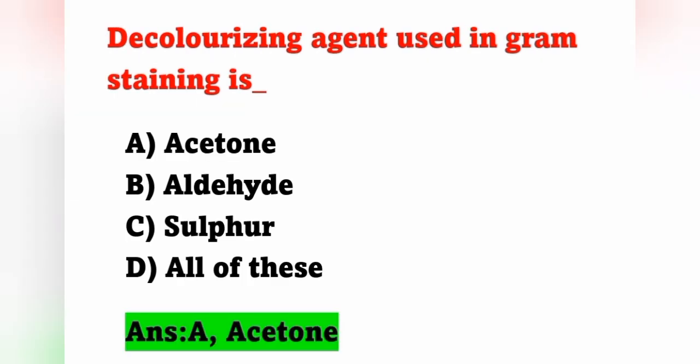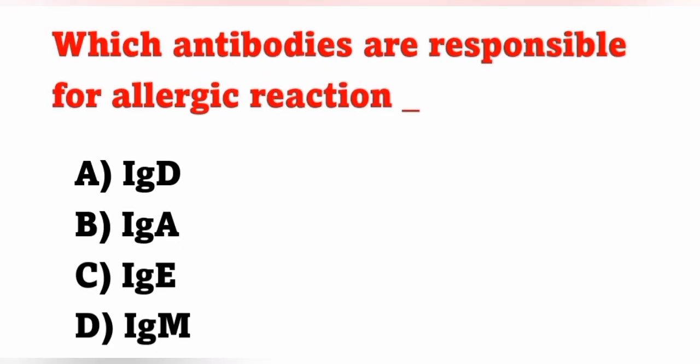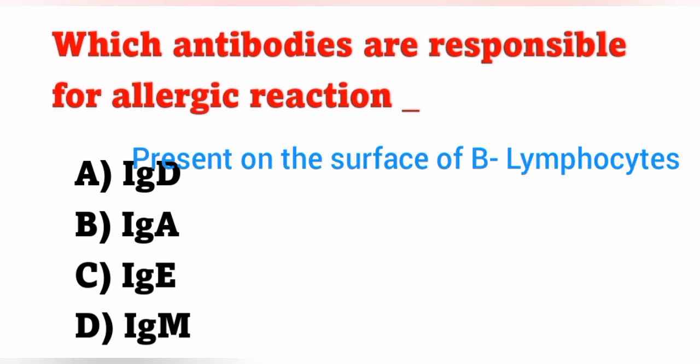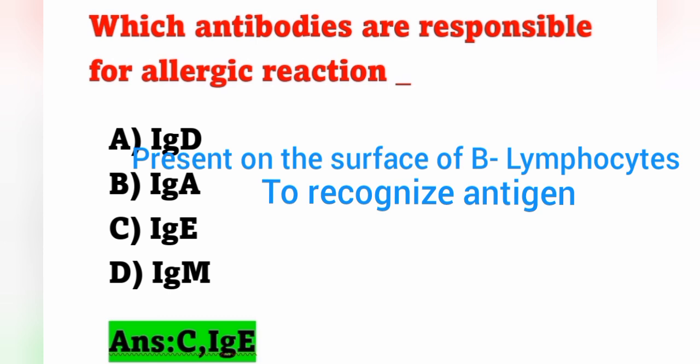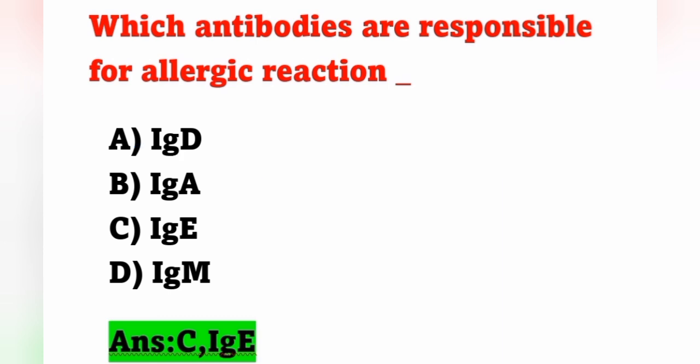Next question: which antibodies are responsible for allergic reactions? Option A: IgD, option B: IgA, option C: IgE, option D: IgM. The antibody responsible for allergic reactions is option C, IgE. IgD is present on the surface of B lymphocytes and its function is to recognize antigen.